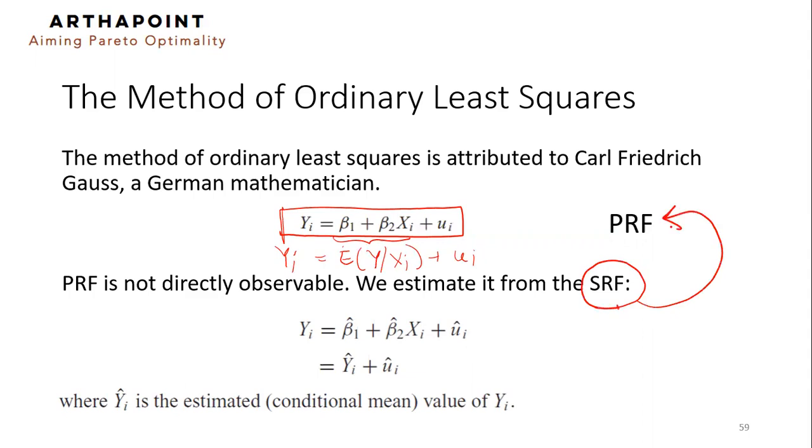The sample regression function will have a very similar function, which is YI is equal to beta 1 hat plus beta 2 hat XI plus UI hat. In a lot of books, instead of UI hat, you will see EI.